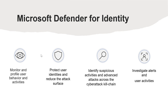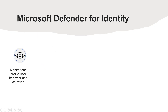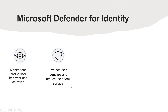Let us learn about Microsoft Defender for Identity capabilities and key areas. The first one is Monitor and Profile User Behavior and Activities. Defender for Identity monitors and analyzes user activities and information across your network, including permission and group membership, creating a behavioral baseline for each user. Defender for Identity then identifies anomalies with adaptive built-in intelligence. The next one is Protect user identities and reduce the attack surface. Defender for Identity gives invaluable insights on identity configurations and suggested security best practices.